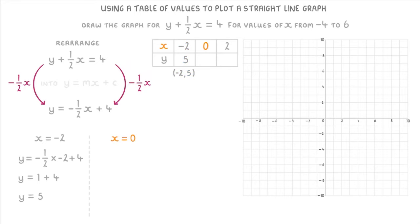Then if we plug in x equals 0, we get y equals minus 1 half times 0 plus 4. So just y equals 4. Which gives us the coordinate 0, 4.